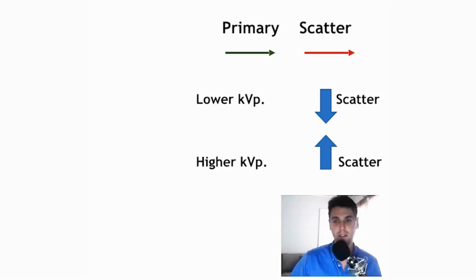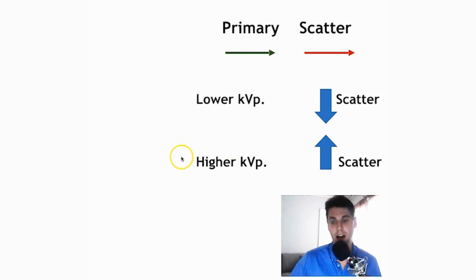So just a high-level takeaway: as we go to lower KVP, we get decreased scatter effects. As we go to higher KVP, we get increased scatter effects.